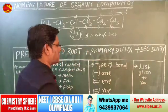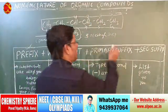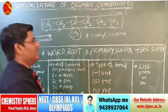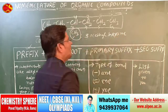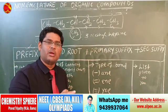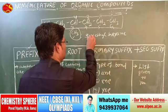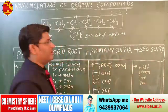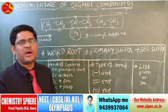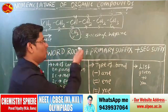After the word root comes the primary suffix — the type of bond. Since a single bond is present, you write 'ane.' A comma is given between number and number, and a hyphen between a number and a letter. The name of the organic compound is 3-methylhexane. It is a very easy formula — this is how you write the IUPAC name of an organic compound.